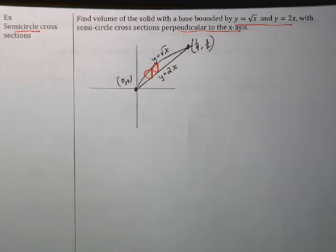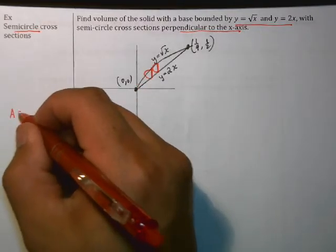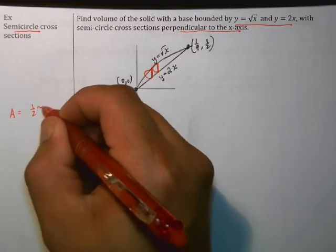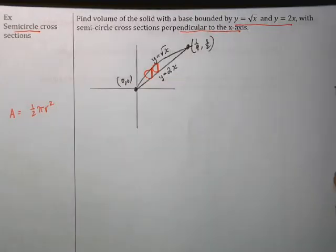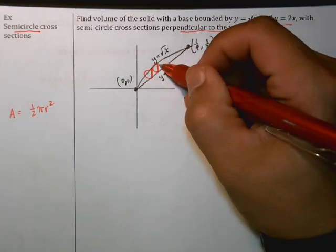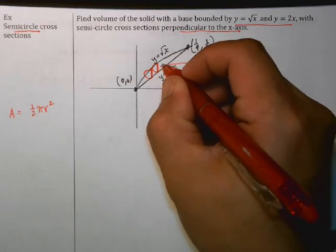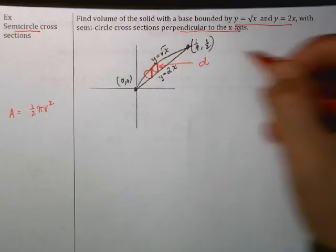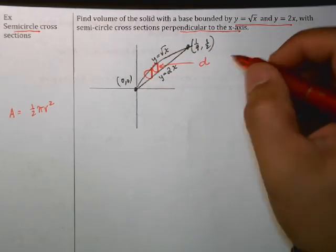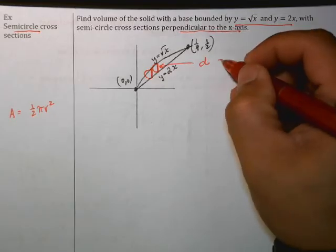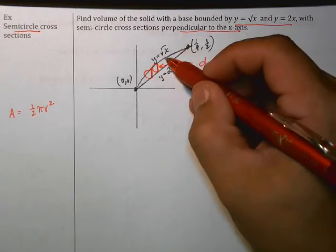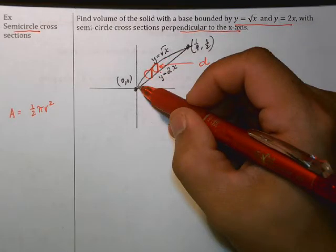Okay, so let's just not forget that the area of a semicircle is equal to one-half pi r squared. And you can see here that r, this length, this red length right here, is actually d or the diameter. Okay, and that's equal to the top curve minus the bottom curve.